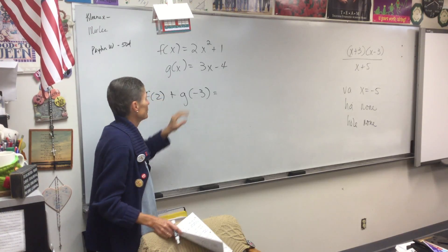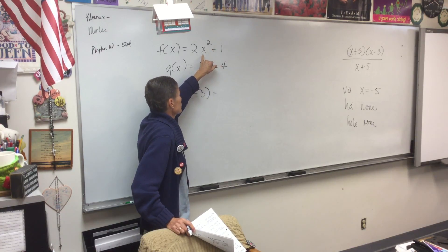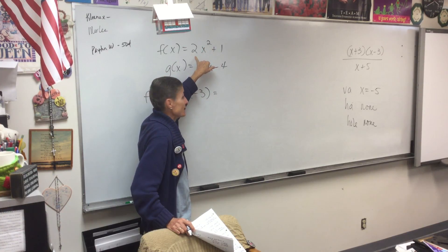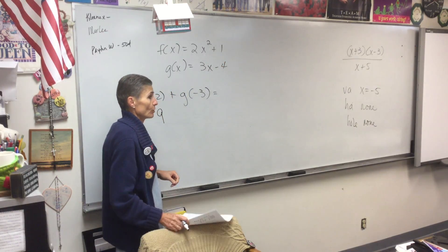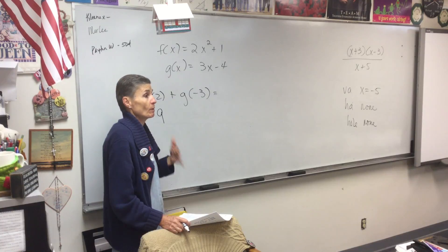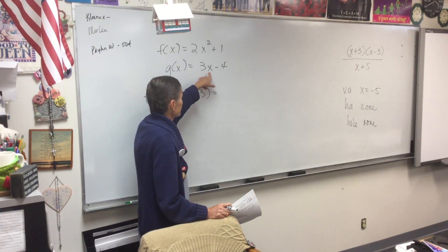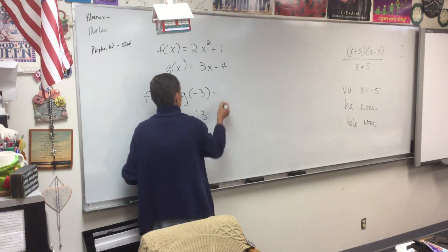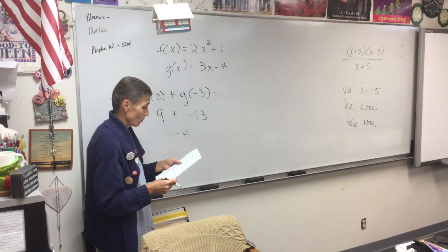What's f of 2? Be careful - we square first. What's 2 squared? 4 times 2 is 8, plus 1 is 9. Make sure you're doing that in the right order - remember PEMDAS, exponents come first. Now g of negative 3: put negative 3 in here, you get negative 13. So the answer to the problem is 9 plus negative 13, which is negative 4.